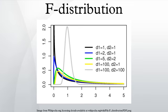In probability theory and statistics, the F-distribution is a continuous probability distribution. It is also known as Snedecor's F-distribution or the Fisher-Yates-Snedecor distribution.